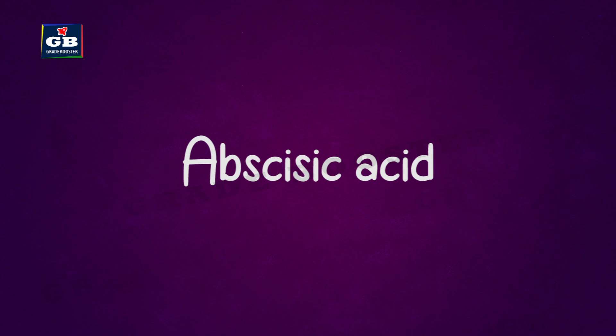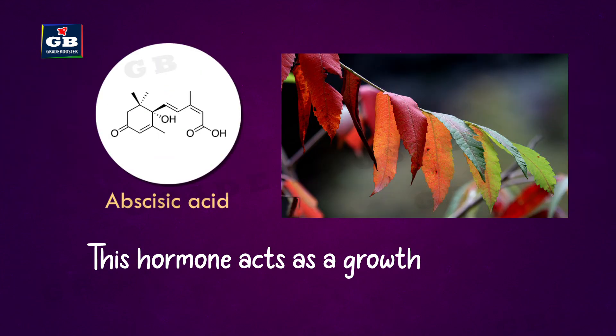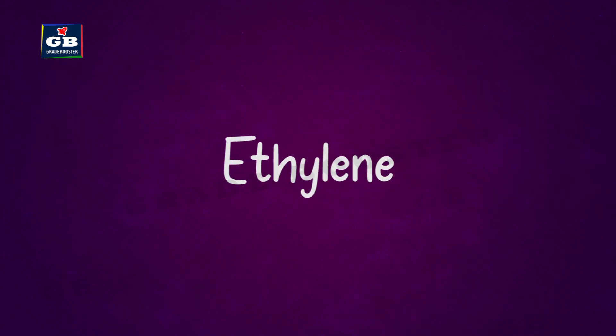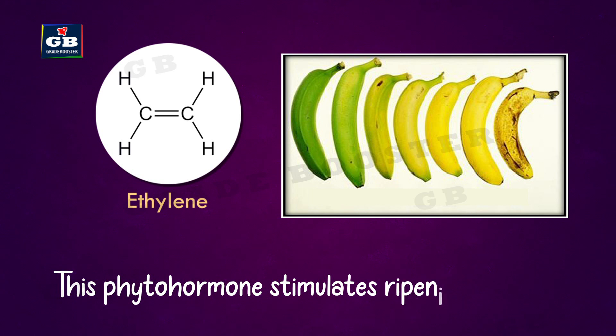Abscisic acid. This hormone acts as a growth inhibitor and helps in the wilting of leaves. Ethylene. This phytohormone stimulates the ripening of fruits.